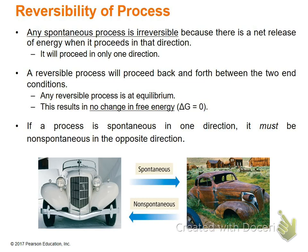If a process is spontaneous in one direction, it must be non-spontaneous in the opposite direction. For instance, a brand new car left out over time will turn into rust because metals are made of iron. Exposing iron to air causes a redox reaction forming iron oxide — rust. This is spontaneous because it doesn't require energy. But if you want to turn it back to a brand new looking car, it will require energy, making it a non-spontaneous process going the other direction.